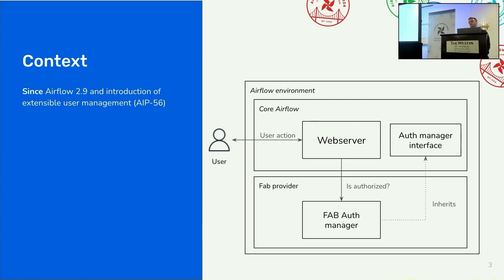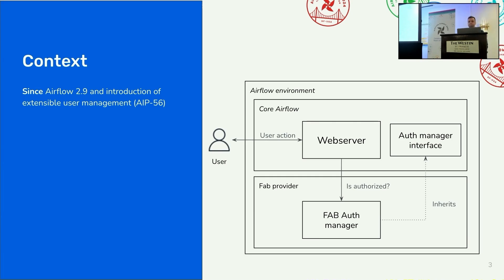Since 2.9, all the code related to user authentication and authorization has been moved and packaged into one class called FAB. It has also been moved from core Airflow to a new provider that was created while working on it.